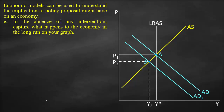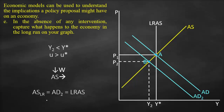In the absence of any intervention, what happens to the economy in the long run? Without government action, Y2 is below potential output Y-star, so unemployment exceeds the natural rate, resulting in a lower nominal wage. Lower nominal wages give producers the incentive to increase production, so short-run aggregate supply shifts to the right. The three curves — SRAS2, AD2, and LRAS — intersect at point C, which we call aggregate supply in the long run.